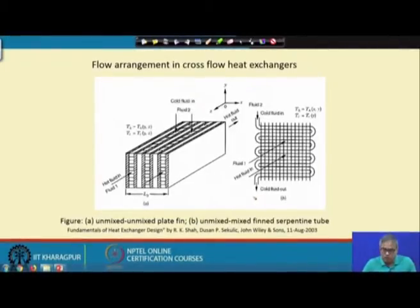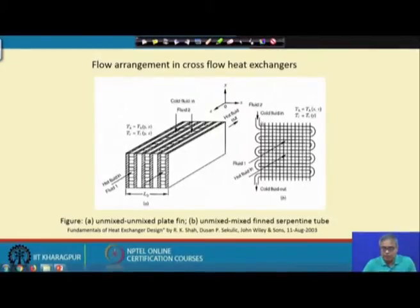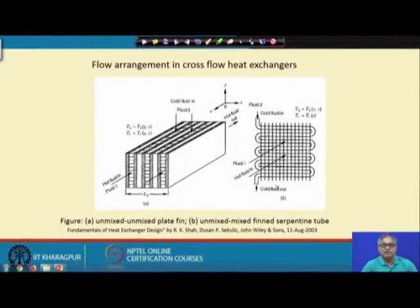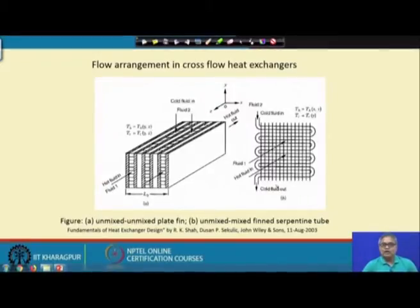Another very common construction of cross flow heat exchanger uses a serpentine tube through which liquid flows, making it very suitable for a liquid-to-gas heat exchanger. Fins integral to the tube are provided and gas flows through the fin passages — a flow passage formed between two adjacent fins. A very common example is in refrigeration, air conditioning, and gas-to-liquid heat exchangers.